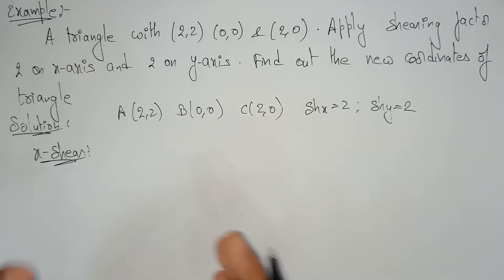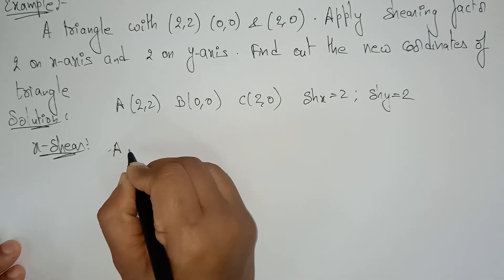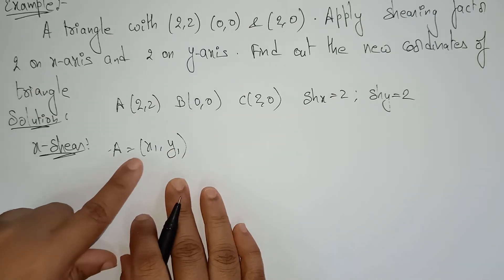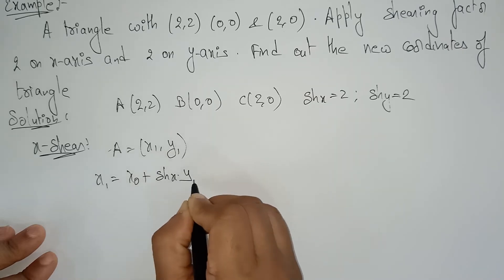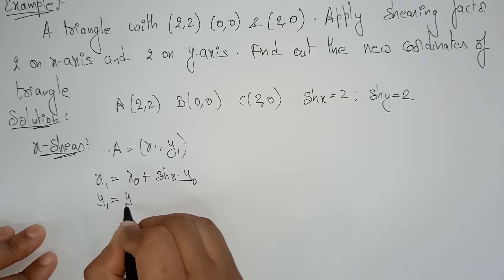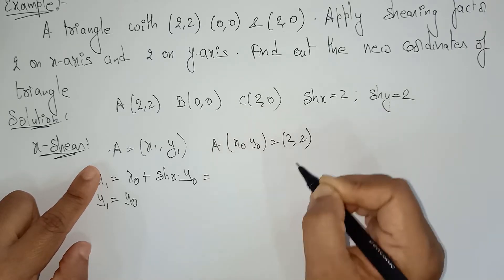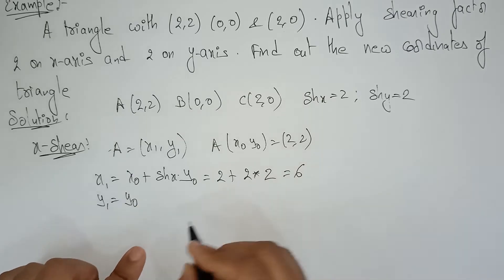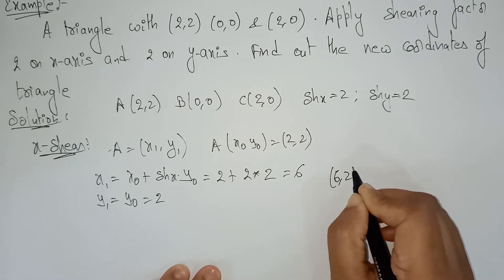Let's look at both examples. For x-shear, for coordinate A (2,2), let the new coordinates be (x1, y1). The formula is: x1 = x0 + SHx × y0, and y1 = y0. So x0, y0 is (2,2): x1 = 2 + 2×2 = 6, and y1 = 2. The new coordinates for A are (6, 2).